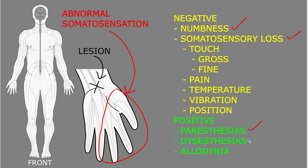Another positive somatosensory symptom is called dysesthesias — a spontaneous positive somatosensory symptom that is unpleasant or painful. A common example is a burning sensation: a person may say they have a burning sensation on the skin even when there is no stimulus or heat applied. Paresthesias can also be evoked — for instance, if the skin is lightly touched, in addition to feeling the touch, the patient may report that it evokes a tingling sensation, which we would also call paresthesias.